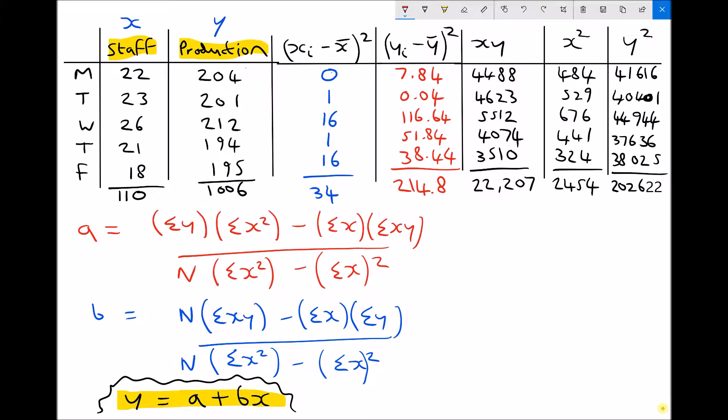First, for a, the first term on the top of the fraction is the sum of y. The sum of y means we're taking all of our y data in the production column and adding them together. We've already calculated that value to be 1006.